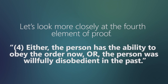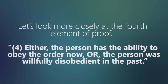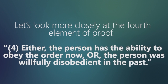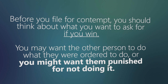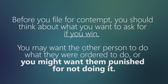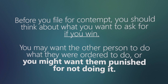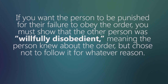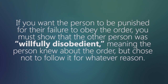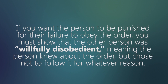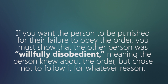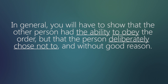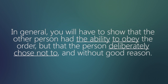Let's look more closely at the fourth element of proof. Number four: either the person has the ability to obey the order now, or the person was willfully disobedient in the past. Before you file for contempt, you should think about what you want to ask for if you win. If you want the person to be punished for the failure to obey the order, you must show that the person was willfully disobedient — meaning the person knew about the order but chose not to follow it. In general, you will have to show that the person had the ability to obey the order but deliberately chose not to and without good reason.